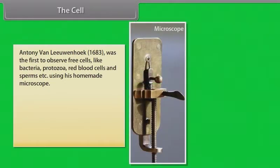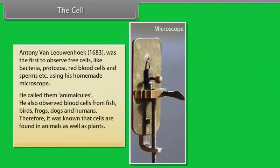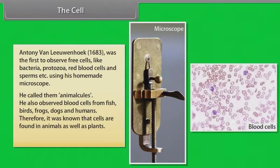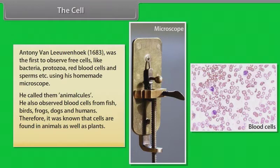He called them animalcules. He also observed blood cells from fish, birds, frogs, dogs and humans. Therefore, it was known that cells are found in animals as well as plants.